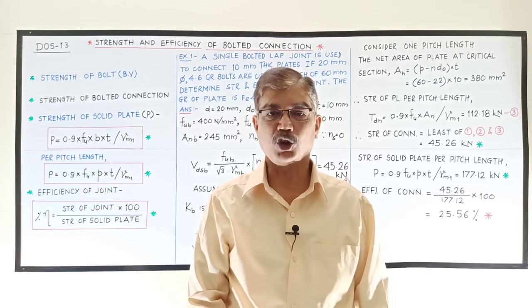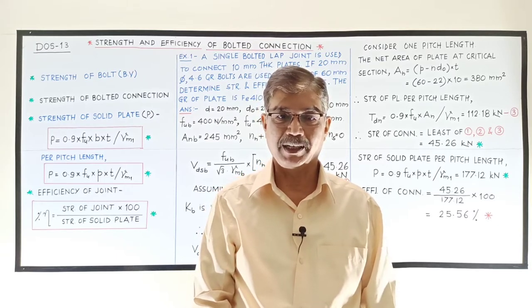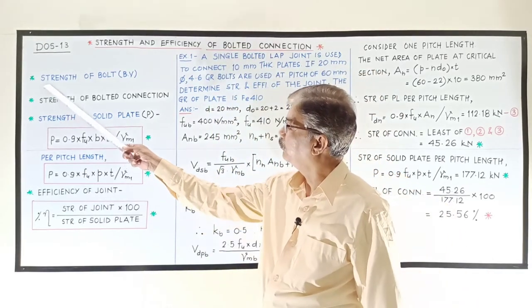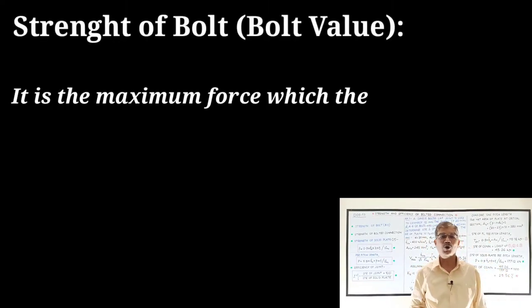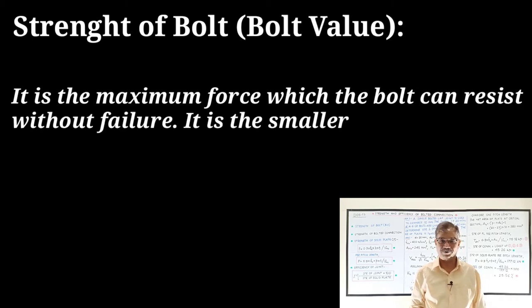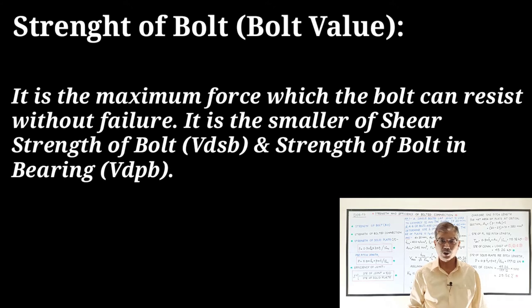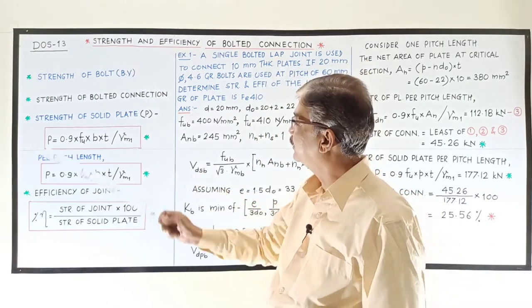In previous videos, we saw how to find out shear strength and bearing strength of bolts and strength of plate in tension. Now, the strength of bolt is also known as bolt value. It is the maximum force which the bolt can resist without failure — the least value of shear strength and bearing strength of the bolt. It is the smaller of VDSB and VDPB, also known as bolt value.